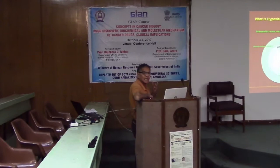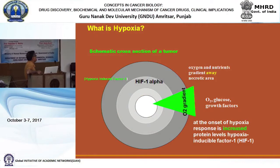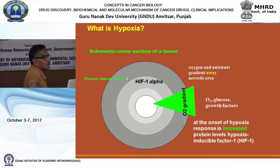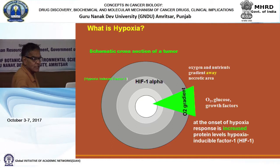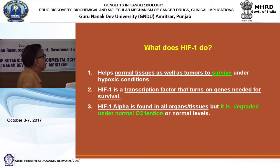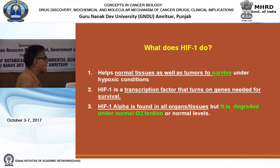In the middle of the tumor there is always necrosis - cells die and form a necrotic core. This creates a hypoxic condition due to an oxygen gradient. Hypoxia is regulated by a factor called HIF-1 alpha, or hypoxia-inducible factor. HIF allows normal tissue as well as tumors to survive under hypoxic conditions - when produced, it makes cells survive without oxygen.